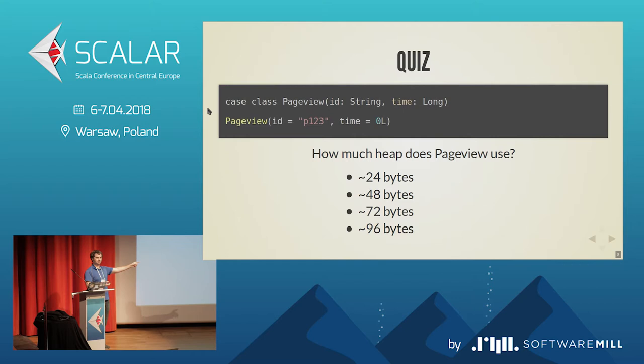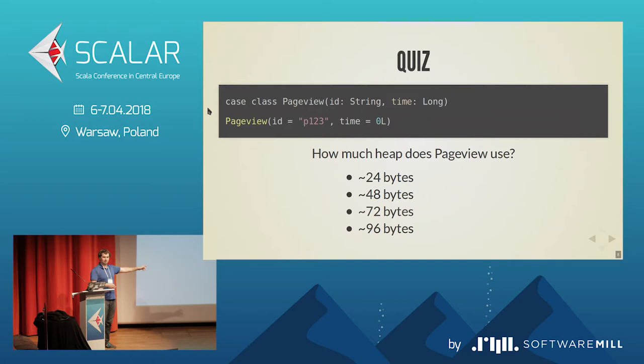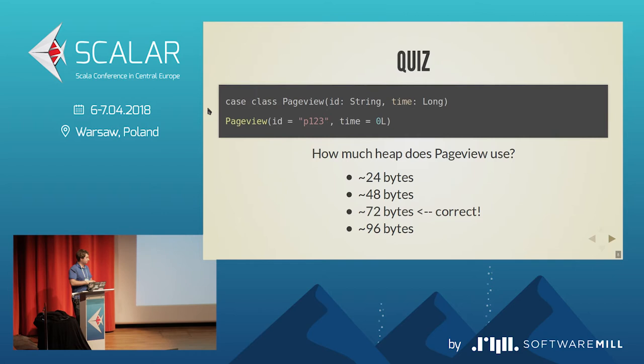We also forgot about object padding — because on x64 architecture, objects in memory should be padded to double-word alignment, so there can be holes between objects. So maybe someone will vote for 96. For this particular instance it's 72, but if you add one more character, it will be 96. It just depends on the padding.